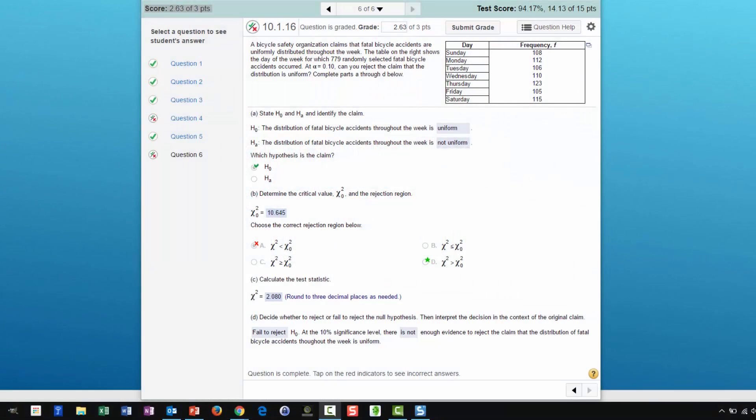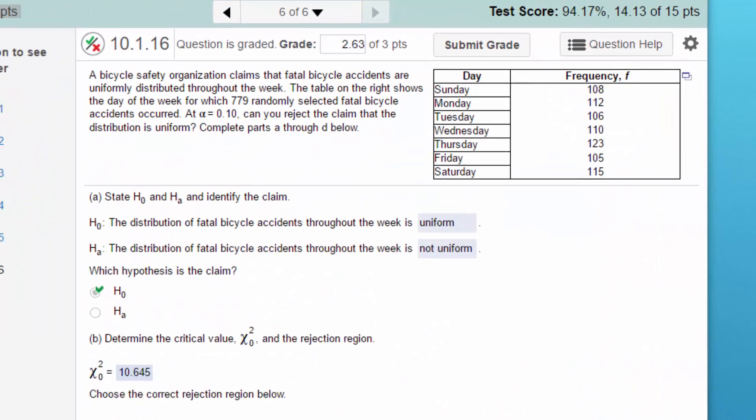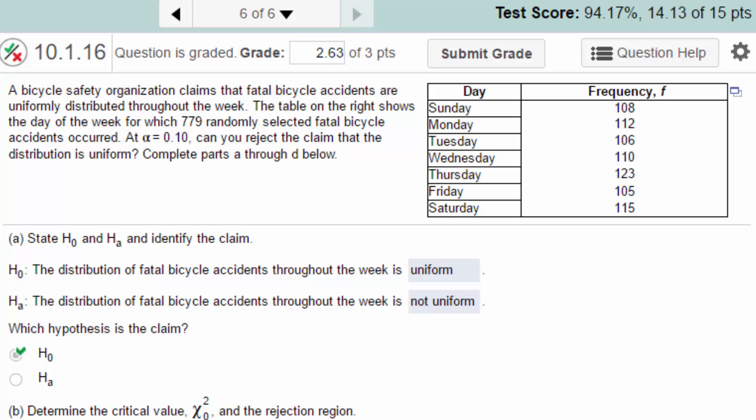Hi, this is Don again and this is another type of Chi-Square problem. In this case, we're looking at a goodness of fit and the question is about a bicycle safety organization and they claim that fatal bicycle accidents are uniformly distributed throughout the week.